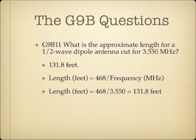What is the approximate length for a half wave dipole antenna cut for 3.550 megahertz? The answer is 131.8 feet. Using the same formula — length in feet equals 468 divided by frequency in megahertz — we get 468 divided by 3.550 MHz, which equals 131.8 feet.